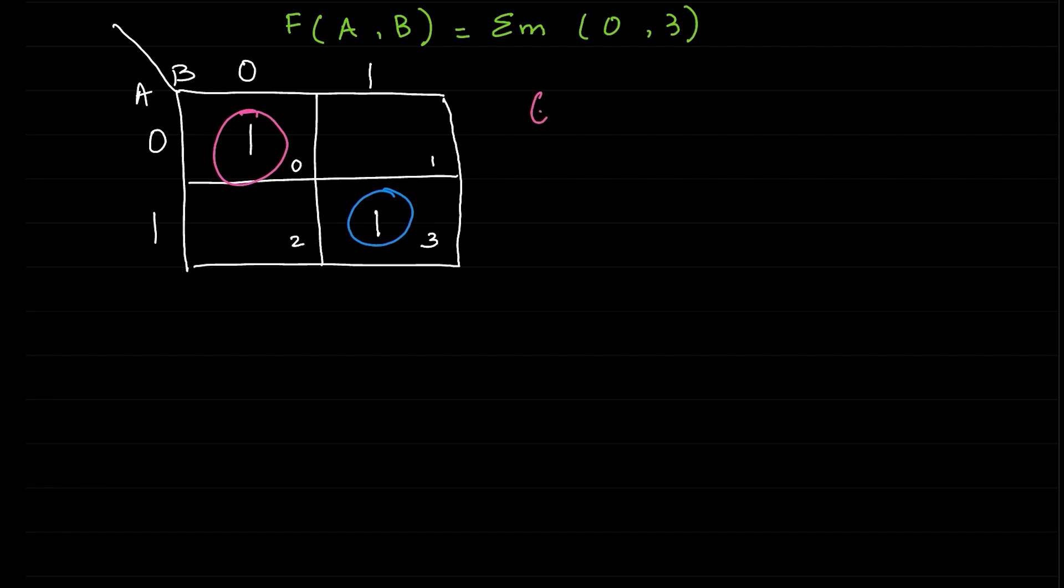Call this group 1. In group 1, A and B both are 0s, so we will call them A̅B̅. If any number in K-map is 0, it is indicated by a bar on the alphabet.